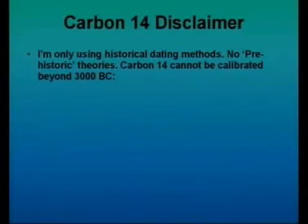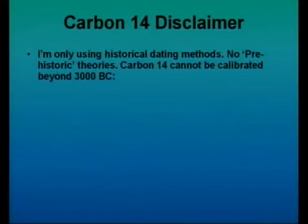I want to mention what I call a Carbon 14 disclaimer. I'm only using historical dating methods with archaeology and I'm not getting into prehistoric theories. Carbon 14 cannot be calibrated beyond 3000 BC, for the simple reason you can't test it against any kind of historical records. We've been led to believe that carbon dating can be used for 20,000 or 30,000 BC, but even within the last few thousand years you have a lot of wrong readings — in fact, over 50% of them get rejected.